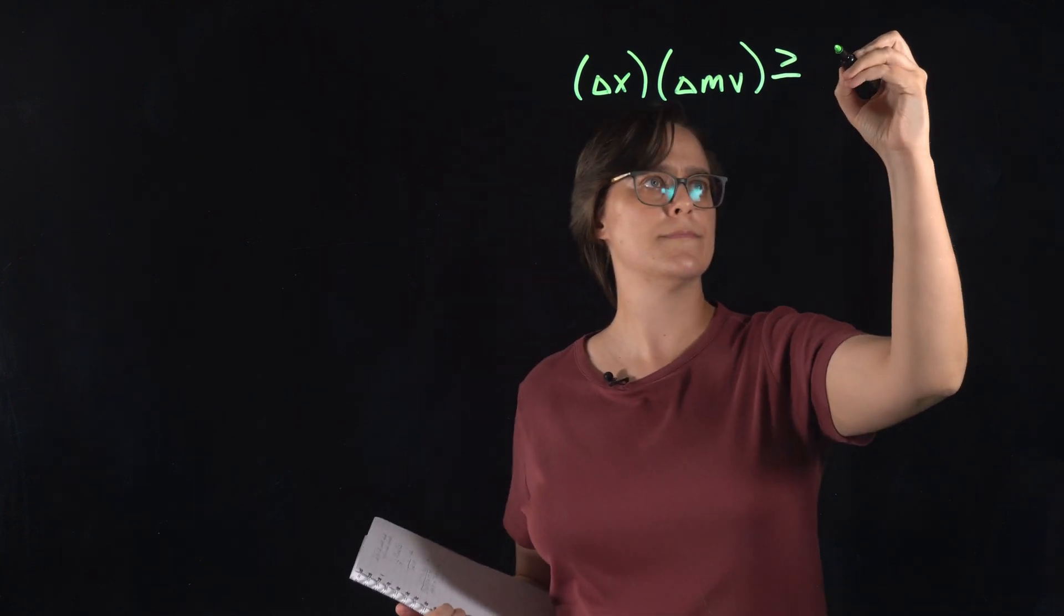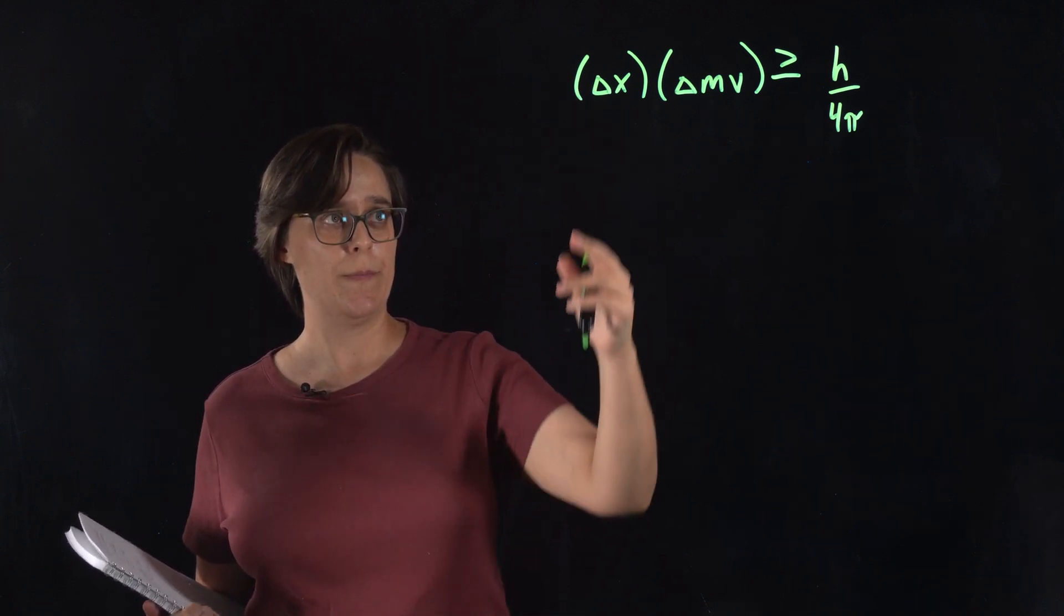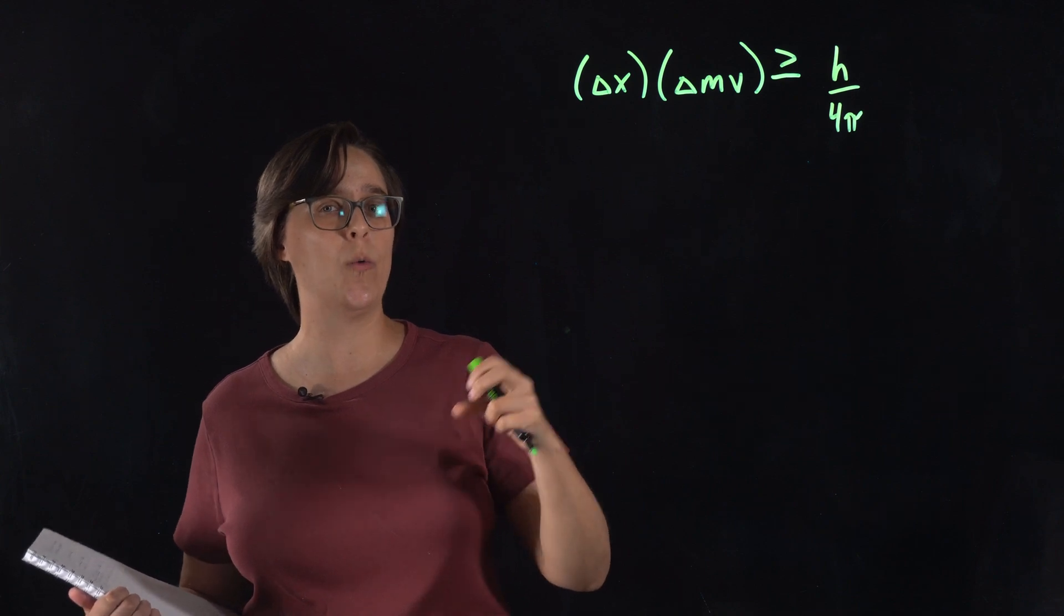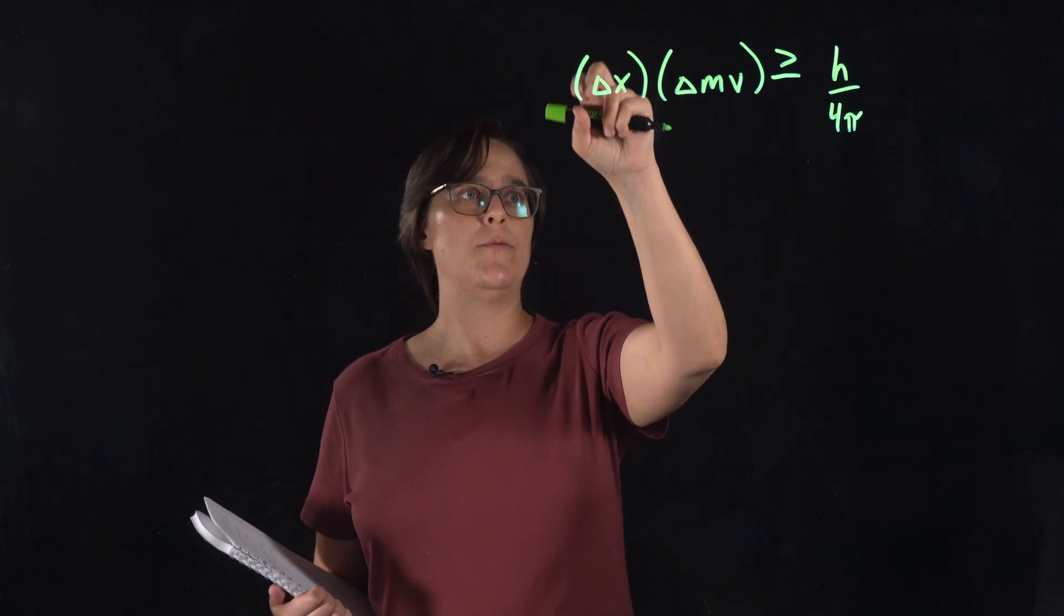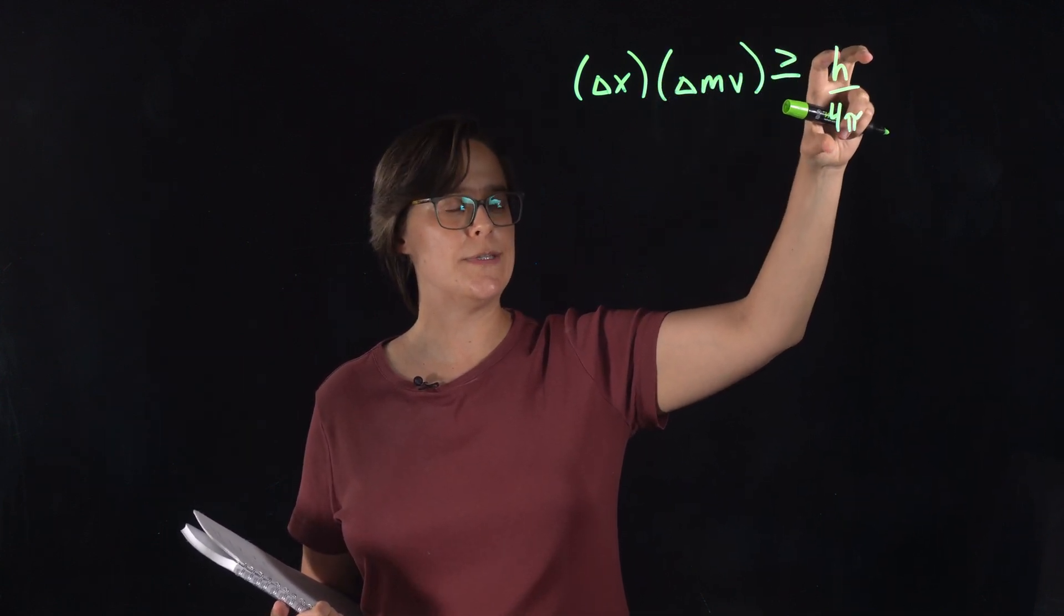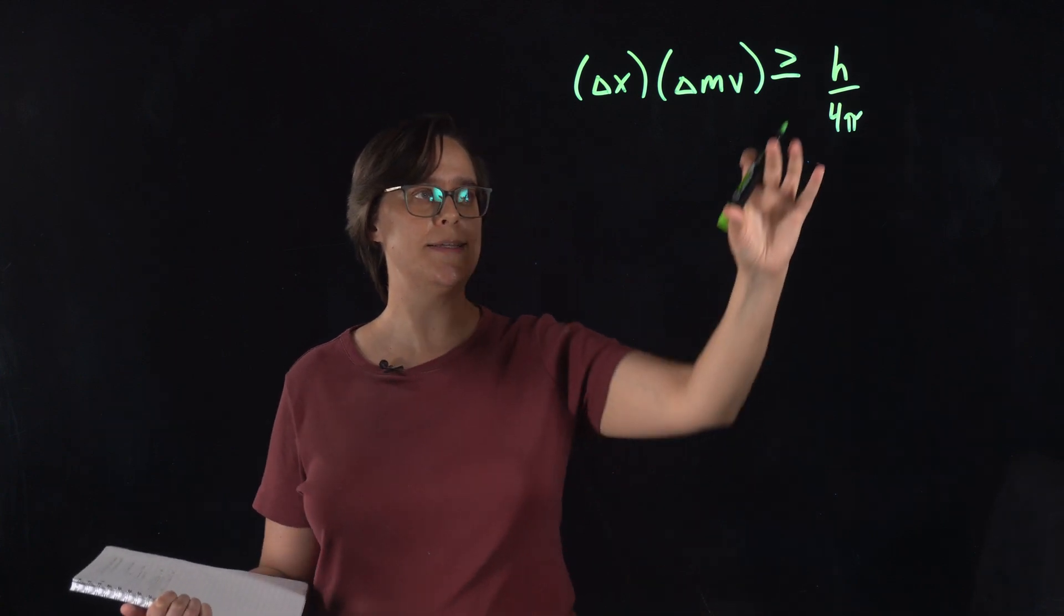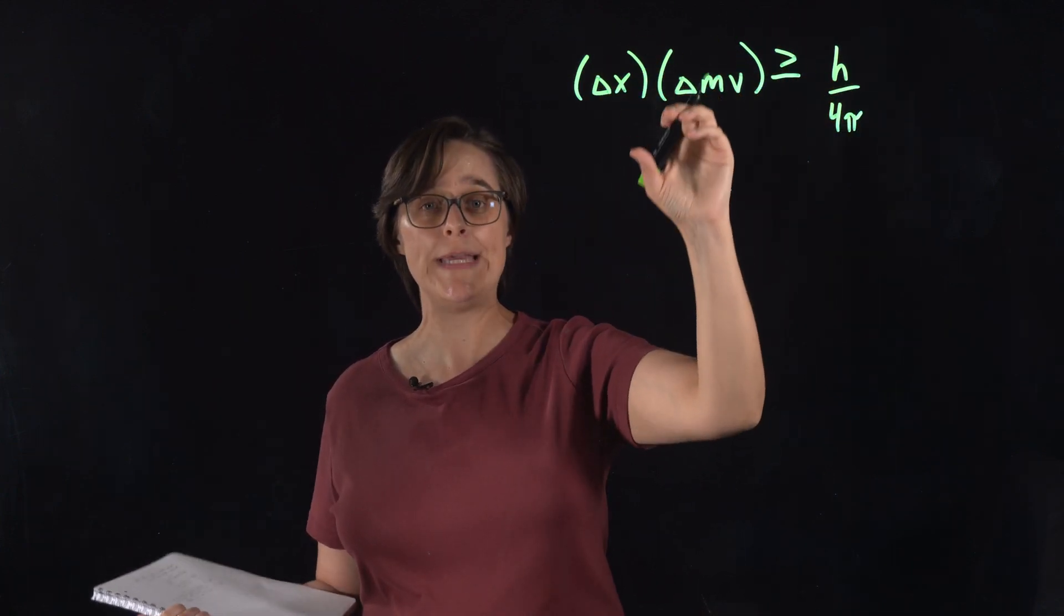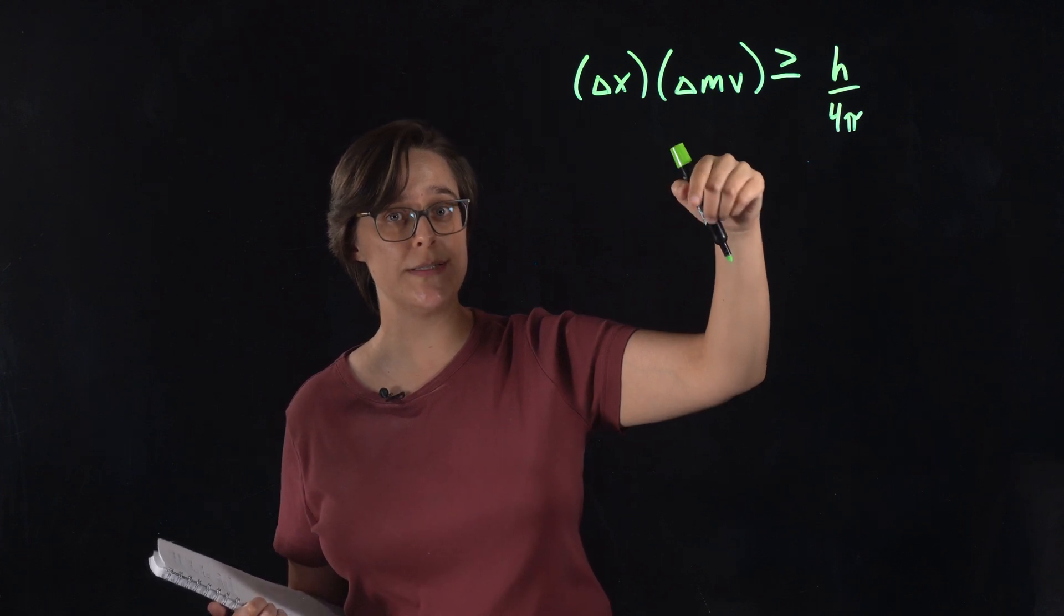Let's look at Heisenberg's uncertainty principle in mathematical terms. Delta x is the uncertainty in the position, so it's not the position itself, it's how well we know the position. And delta mv is the uncertainty in the momentum. When we multiply these two, that result is greater than or equal to a term that's always constant. H is Planck's constant, divided by 4 pi. This is a fundamental limit to how well we can know either of these. If the uncertainty of the position is high, the uncertainty of the momentum is low, and vice versa.